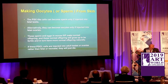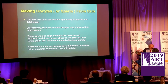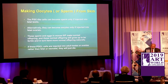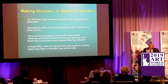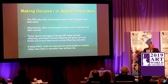PGC-like cells can become oocytes only if injected into fetal ovaries. It has been tried: you cannot inject IPS cells derived from a male into a female ovary and develop anything. It has to be XX into an ovary and XY into a testis. These sperm and eggs in mouse IVF make normal offspring, and those offspring grow up to have normal offspring by natural intercourse. If the PGC cells are directed into adult testis or ovaries rather than fetal or neonatal, they will just die.